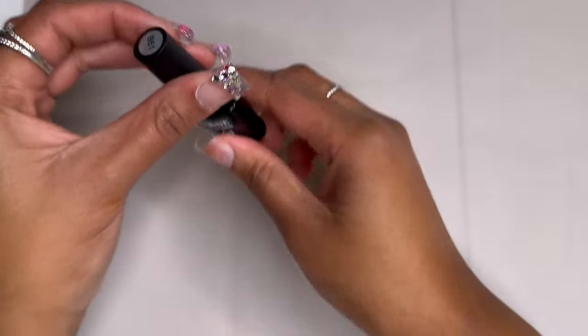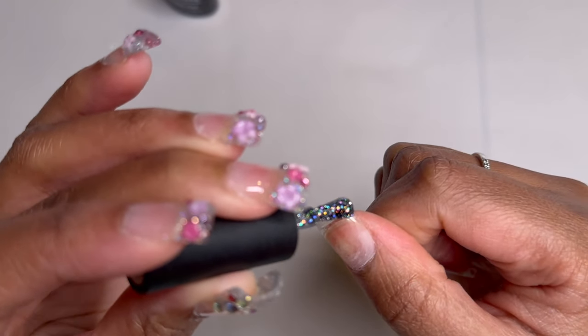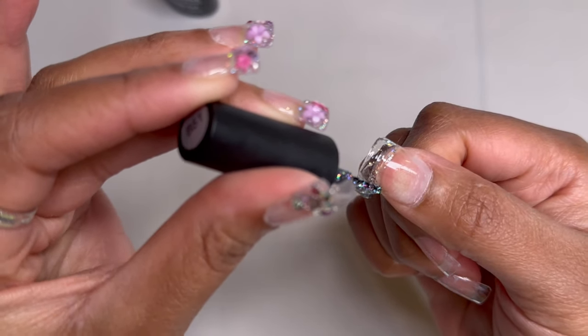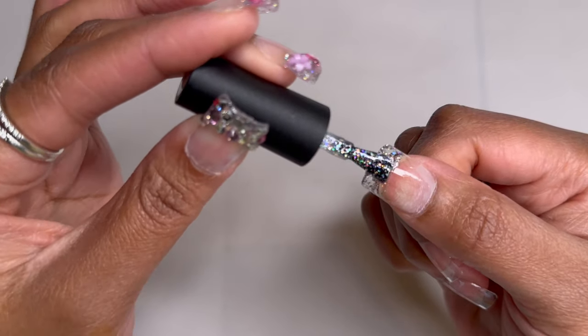Now I'm going to go in with my hollow glitter color and create a French tip. Don't worry about the ashiness at the bottom of the nail. We will handle that in just a few seconds.